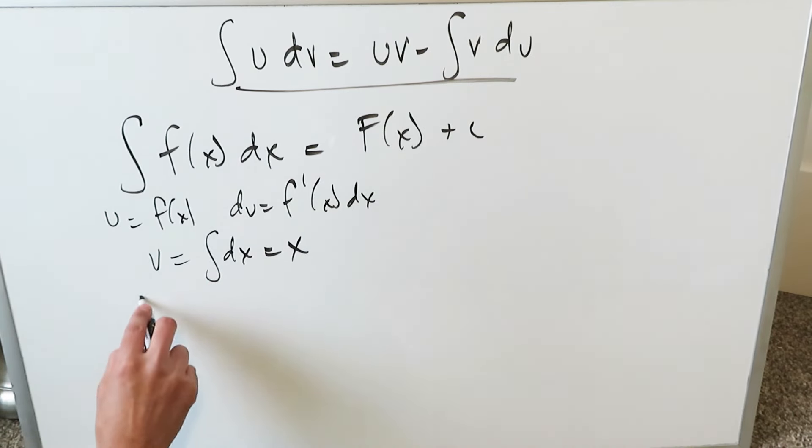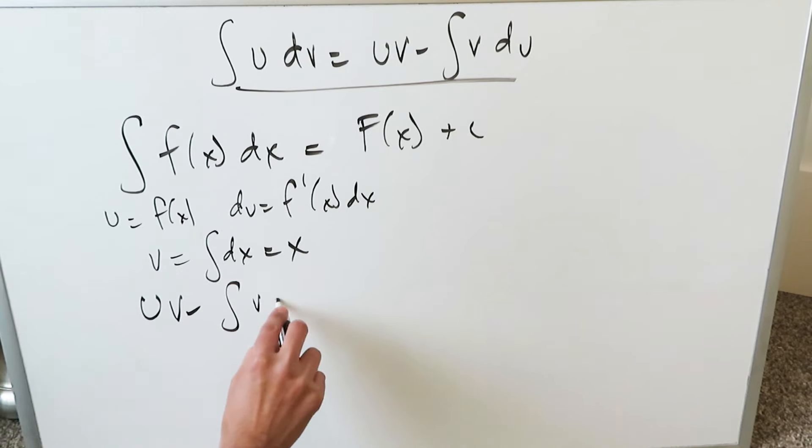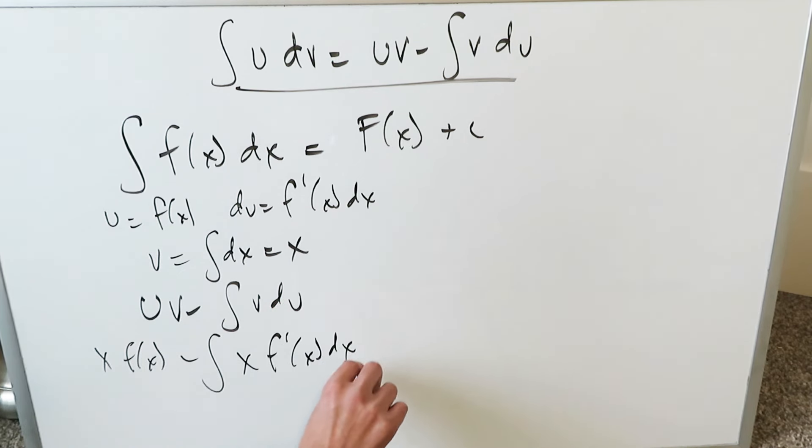Now you run this through uv minus integral v du. What is it that you get? u and v. I have x f(x) minus integral v du. x and du is right here: derivative of your function and dx.